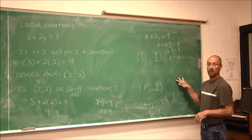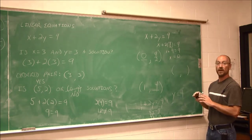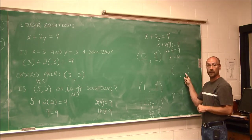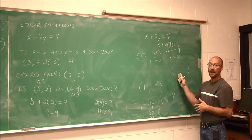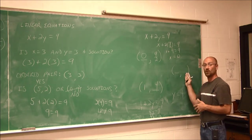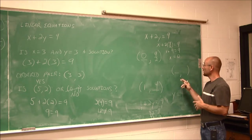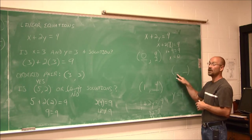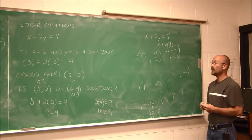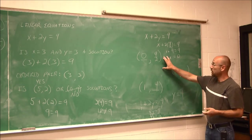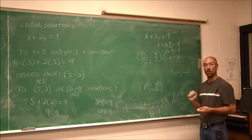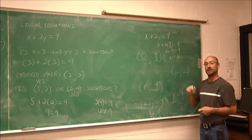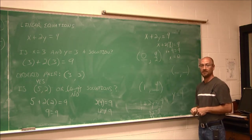Now try one on your own. Pick any value for x and solve for y, or choose any value for y and solve for the other. If you want to take it further, plot all of these points on a Cartesian coordinate graph and see what you get — maybe you'll understand why these are called linear equations. This has been section 6.1. Thank you for watching.